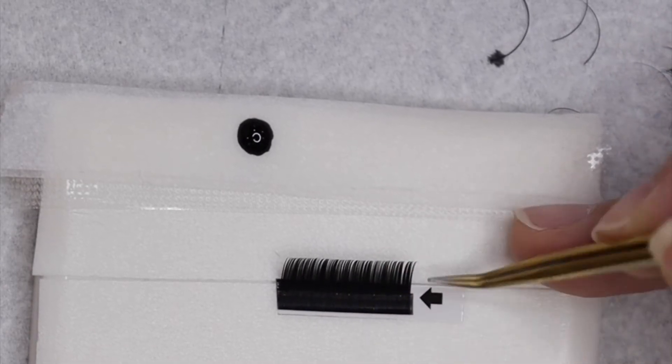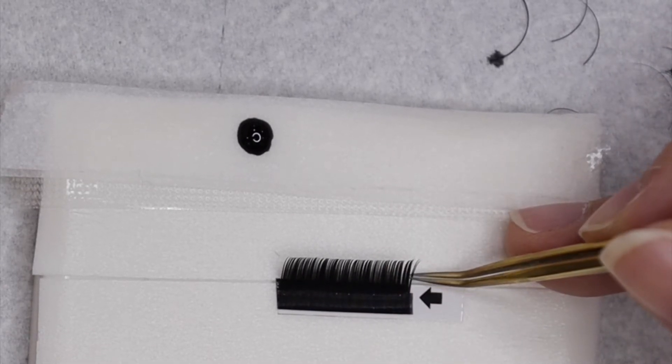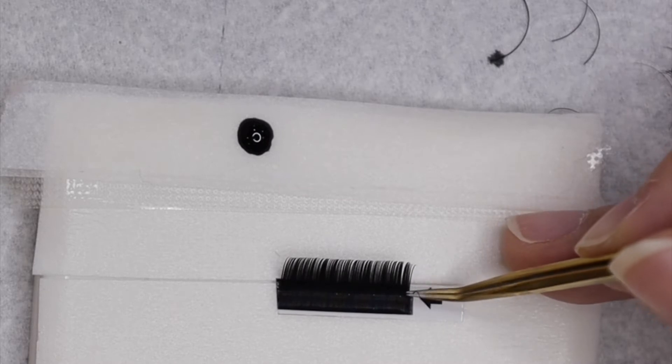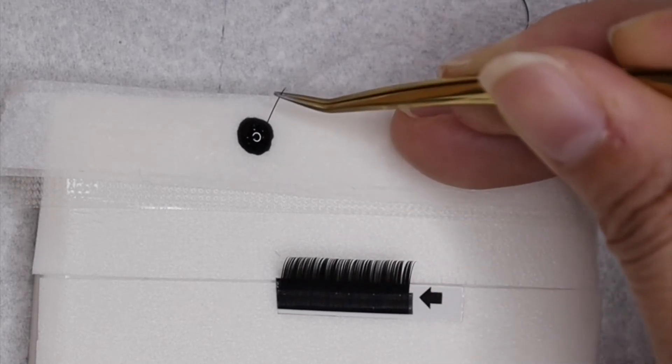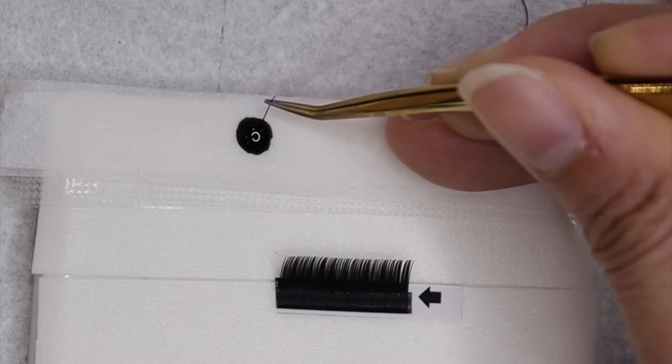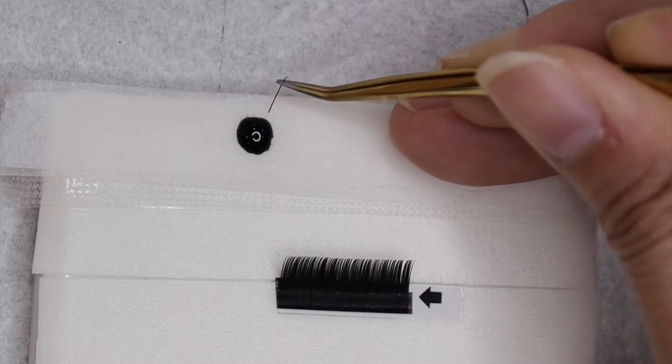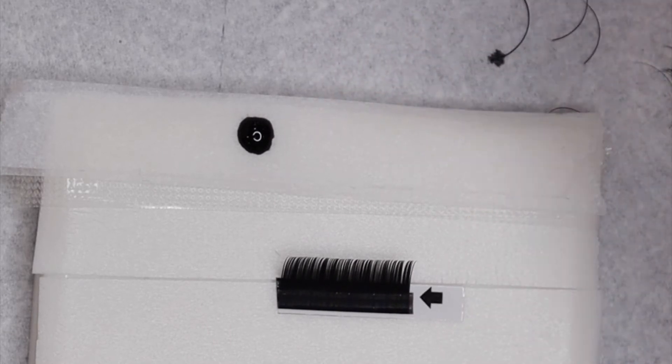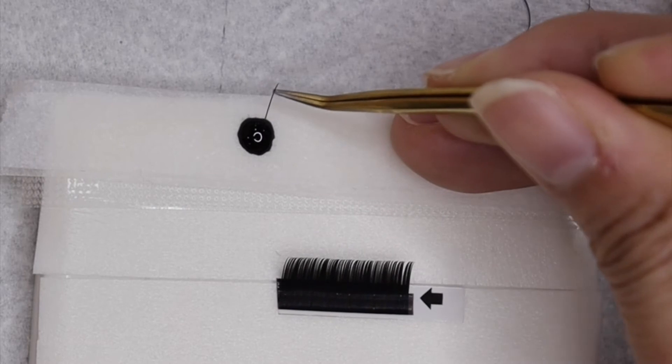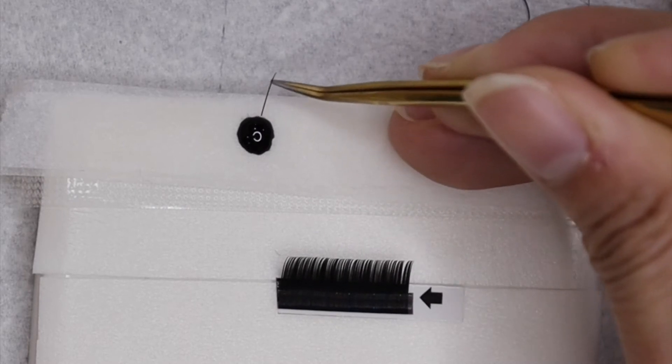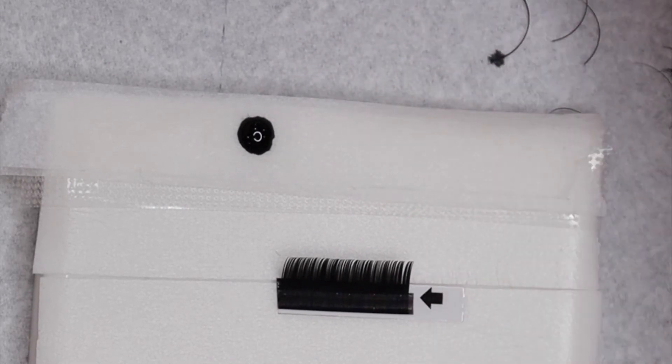For the appropriate amount of glue dipping for classic lashes, we're going to grab one lash, dip in two millimeters or three and out. Again, dip in two to three millimeters and pull it out. Very controlled.